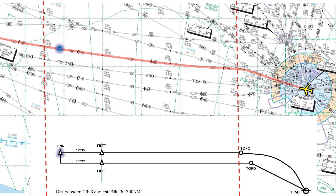We've ticked all the boxes. The weather change and top of climb are roughly the same, so we'll separate the weather at top of climb. We'll then fly out to Fillet, our common fix, then to the PNR, come back to Fillet, then to top of descent into Adelaide with an approach. That's step 3 complete. Let's draw this up on a flight plan and then talk about step 4.